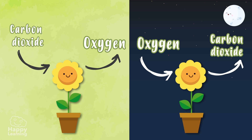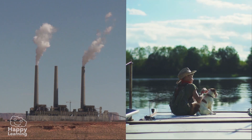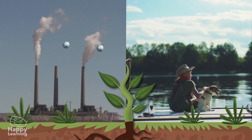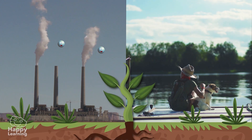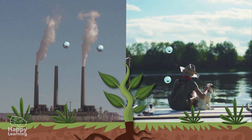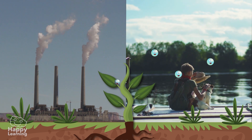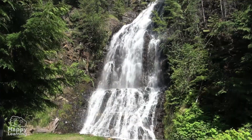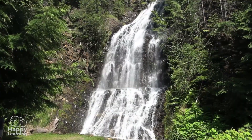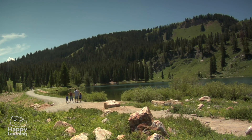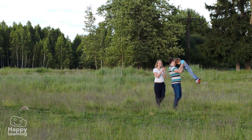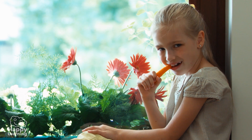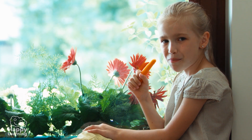One last thing to understand the importance of photosynthesis: when plants absorb dirty and contaminated gases, they transform them into pure air — into oxygen — and this way they clean the atmosphere and all of nature. Plants are the best solution to fight against contamination, don't you think? Goodbye friends, and don't forget to subscribe to Happy Learning TV.